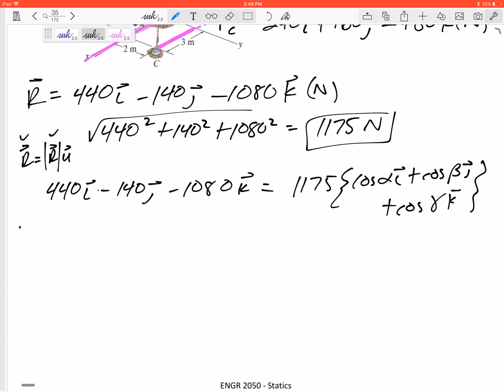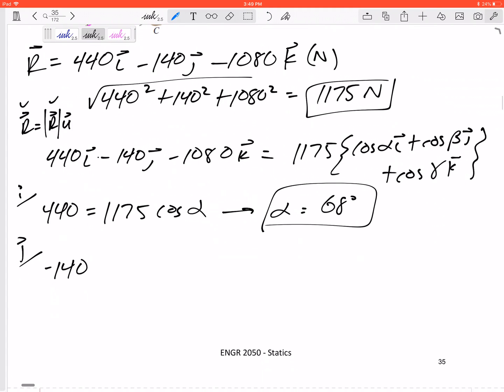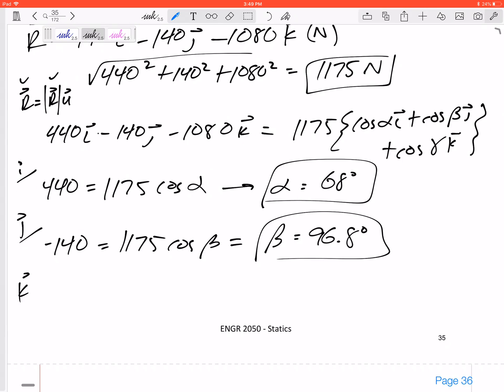The I's: 440 equals 1175 cosine alpha, I would get alpha 68 degrees. J, K negative - don't forget these negatives, take those into account. Negative 140 equals 1175 cosine beta, beta is 96.8 degrees. And K, negative 1080 equals 1175 cosine gamma, gamma equals 157 degrees.